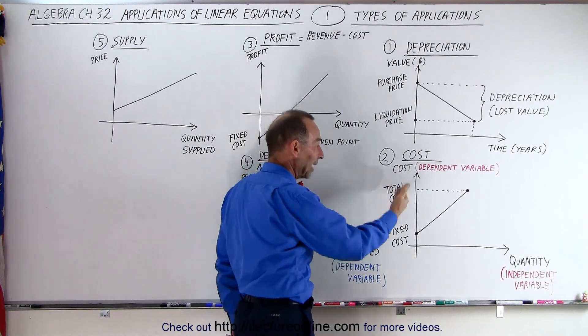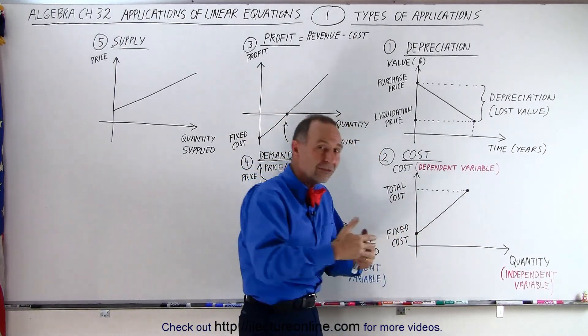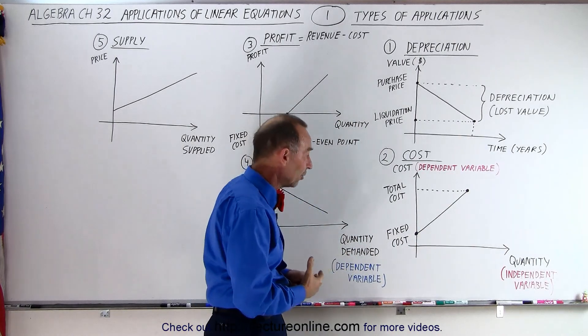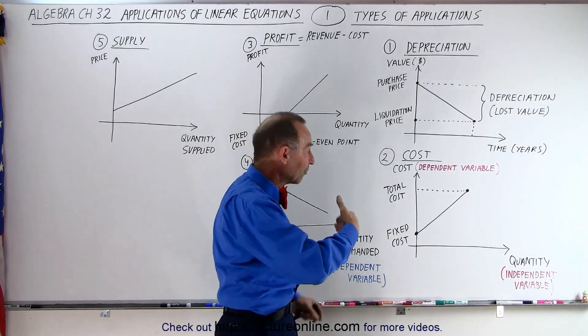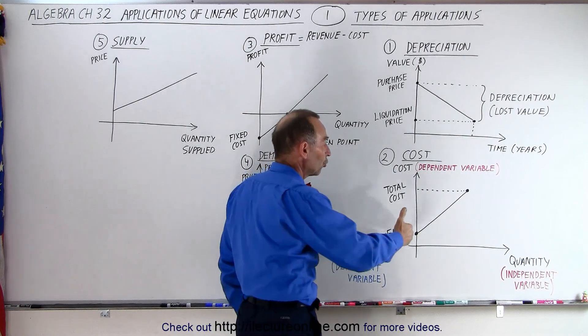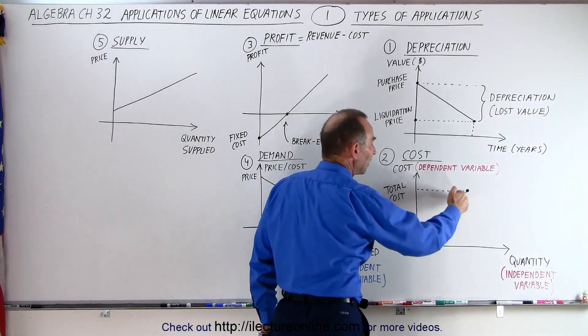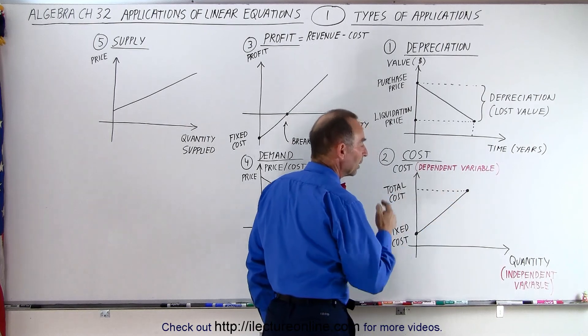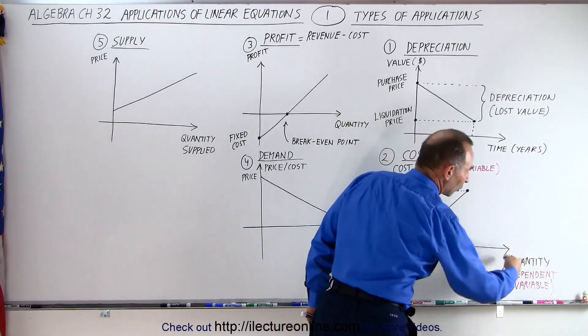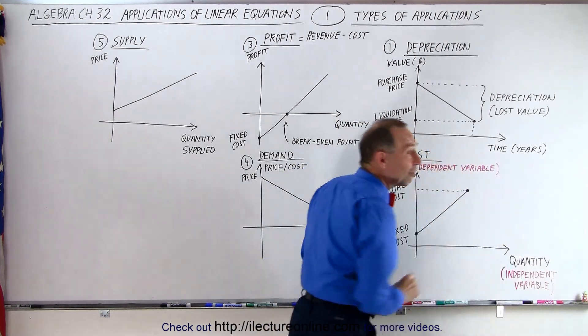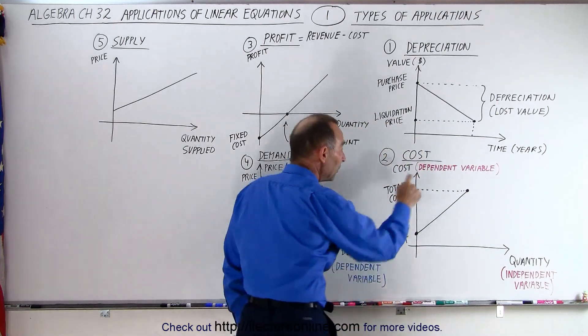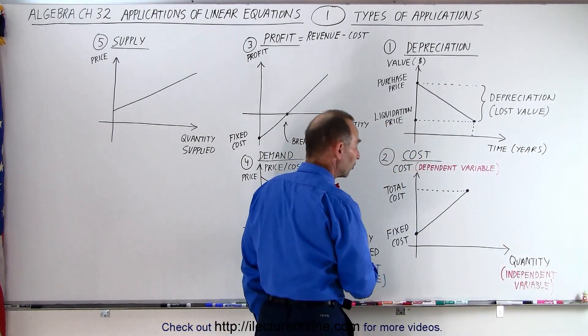Then as you sell hamburgers, you also need to buy the buns and the meat and the lettuce and the mayonnaise and all that. And so for each hamburger sold, you have a certain amount of cost. So the total cost to produce hamburgers is the fixed cost plus what we call the variable cost.